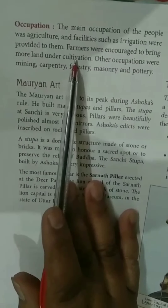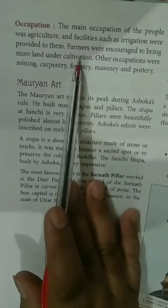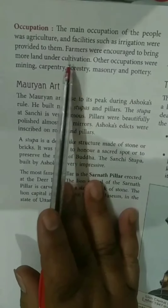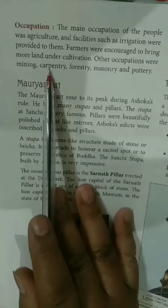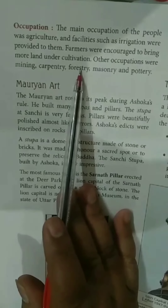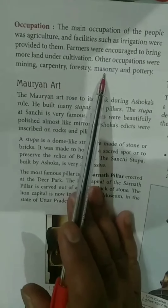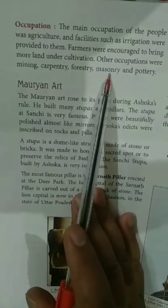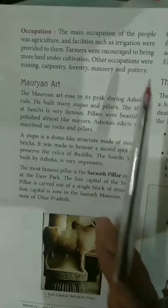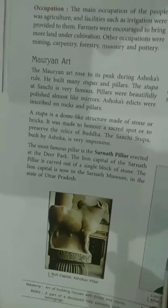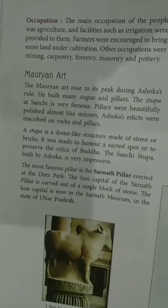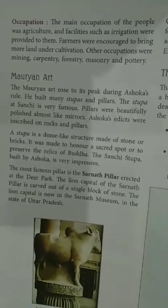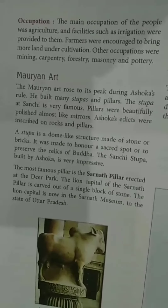Other than agriculture, the other occupations practiced were mining, carpentry, forestry, masonry, and pottery. Masonry means the art of building houses with the help of bricks and stone.